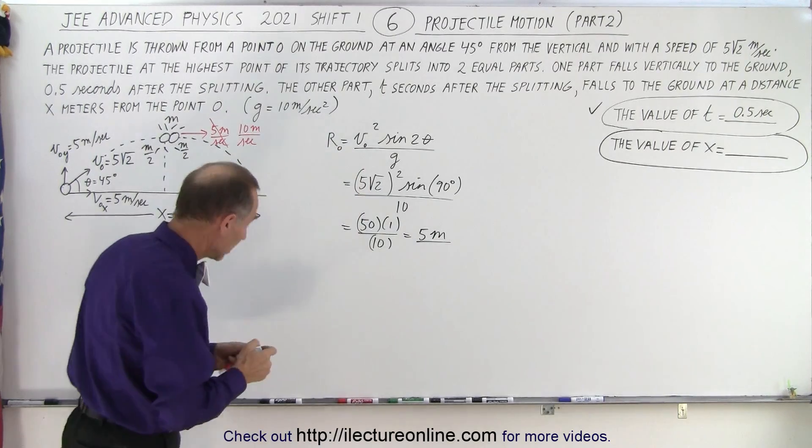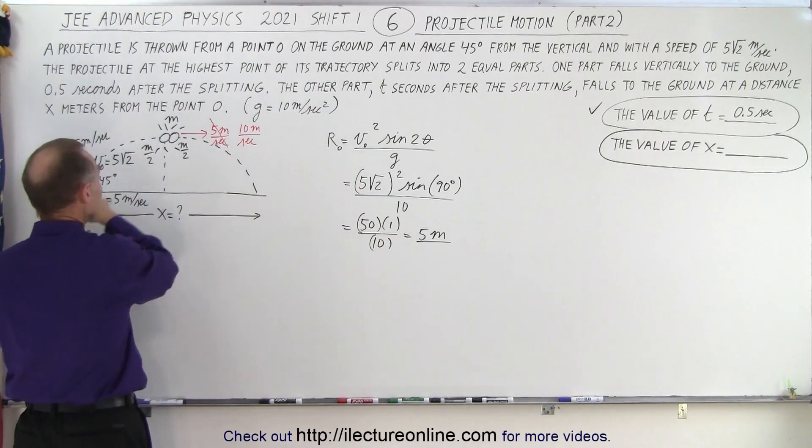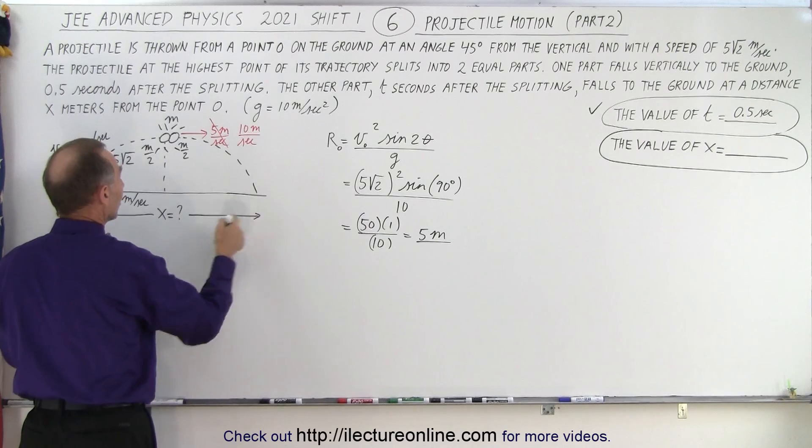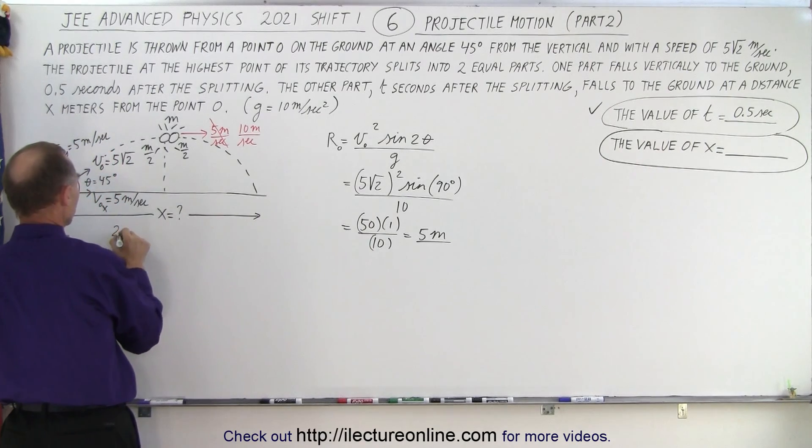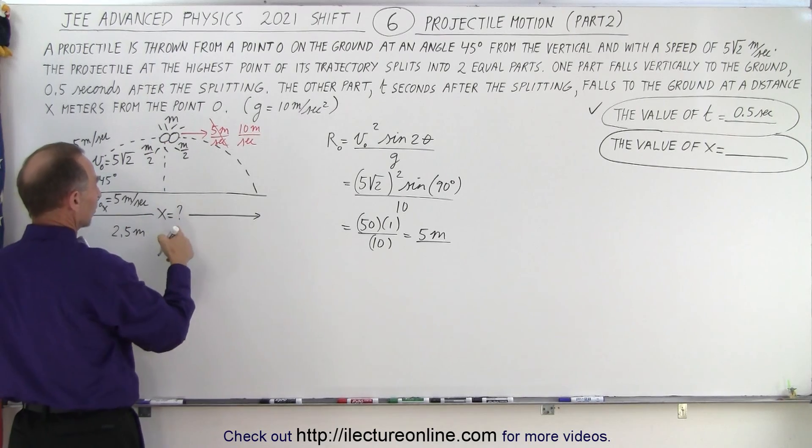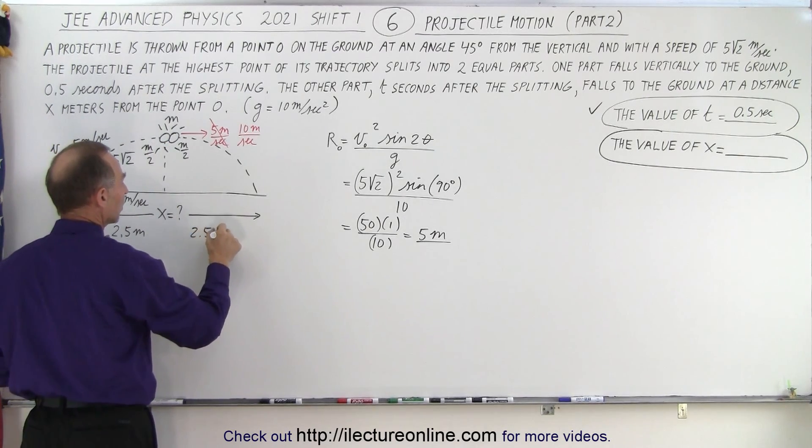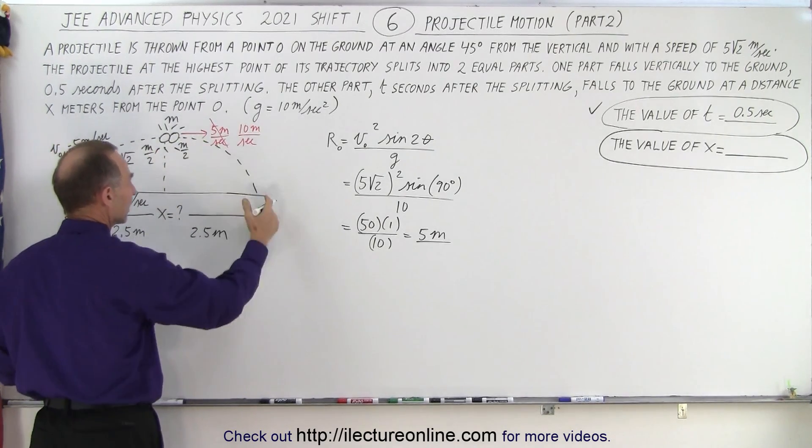So originally the object would have gone a distance of 5 meters. So that means it would have gone 2.5 meters to reach the very top in the horizontal direction, and another 2.5 meters by the time it came back down.